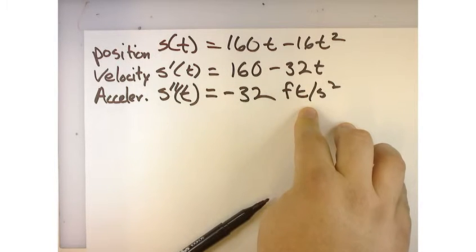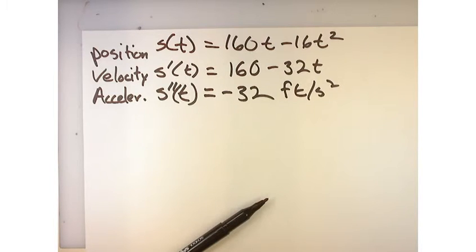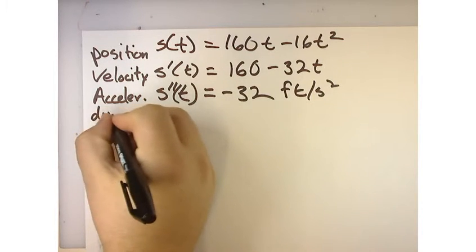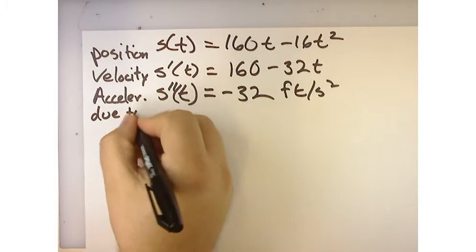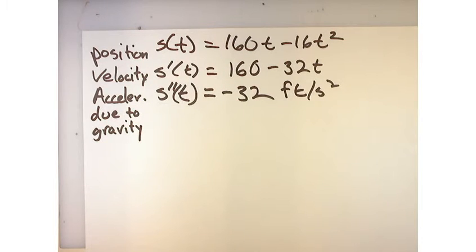We learned that 9.8 meters per second squared was the acceleration due to gravity, but now we have feet per second squared. If you were to convert that to meters per second squared, 32 feet per second is 9.8 meters. So this is the acceleration due to gravity, which is what we would expect. Because of Newton and apples. That's it for part C.